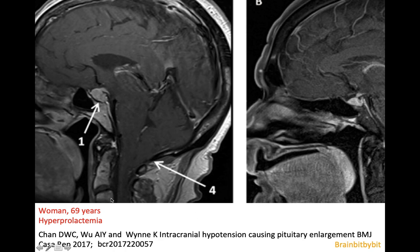This is an overweight 69-year-old female who presented with hyperprolactinemia after getting a shunt for intracranial hypertension. On MRI you can see a convex border of the pituitary and sagging of the brain, indicating over-drainage and signs of intracranial hypotension. After adjusting the shunt, the pituitary and the sagging of the brain normalized.